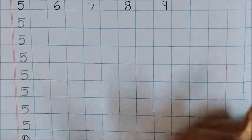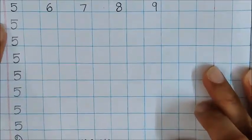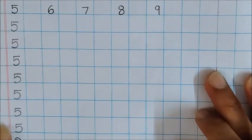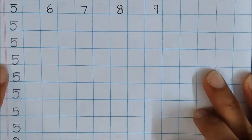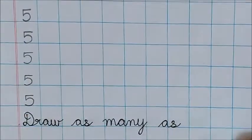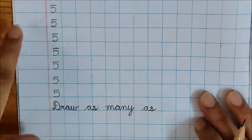So did you see children? My all the numbers are touching the blue line. So even you have to write like this. Your all numbers should touch the blue line. Now like this children you have to write all the numbers.